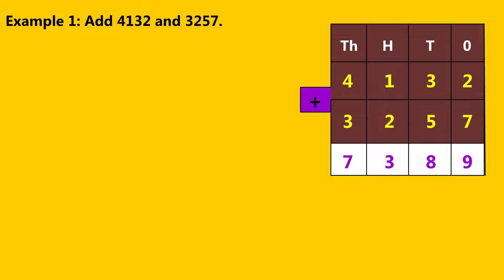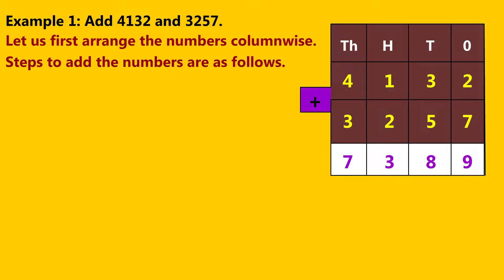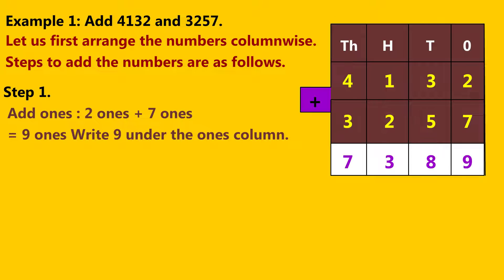Example 1: Add 4,132 and 3,257. Let's first arrange the numbers column-wise. Steps to add the numbers are as follows. Step 1: Add ones. Two ones plus seven ones is equal to nine ones. Write nine under the ones column.